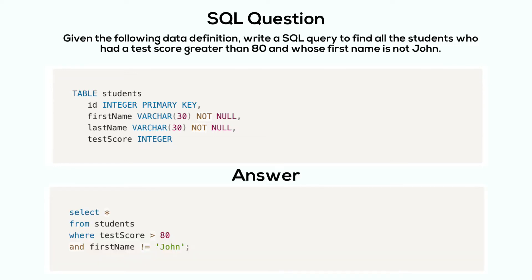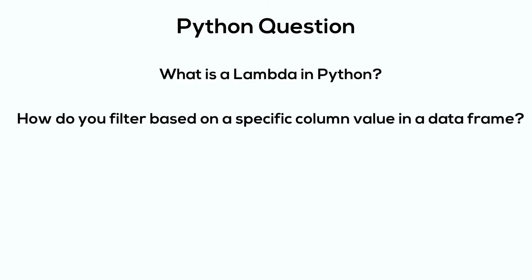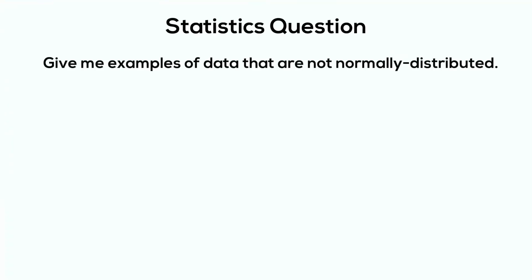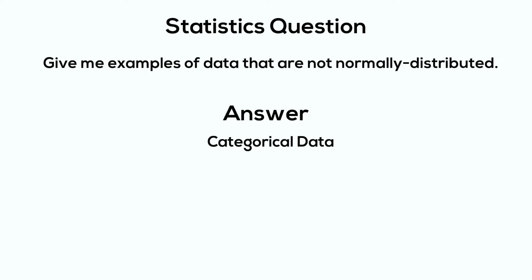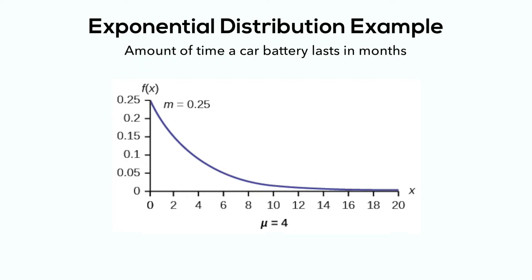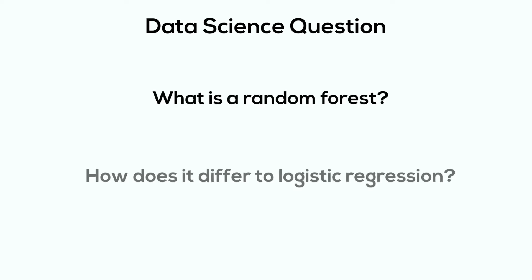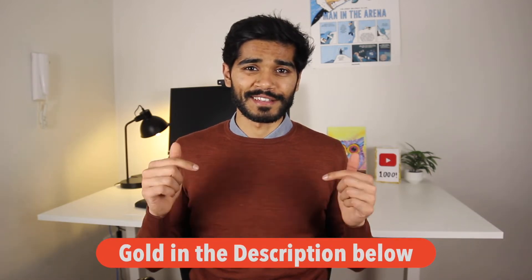The solution is as follows. The difficulty of the SQL-related question will vary based on the level you apply for. Examples of Python questions could be what is a lambda in Python, or how do you filter based on a particular column value in a data frame. For statistics, an example could be: give me examples of data that are not normally distributed — such as categorical data like education level, or data that follows an exponential distribution like the amount of time in months that a car battery lasts. Finally, data science questions could include what is a random forest or how does it differ from logistic regression. I'll leave links to helpful resources in the description below.